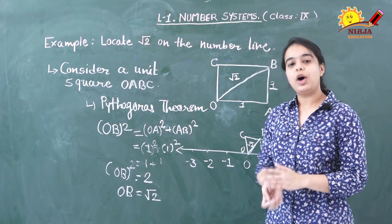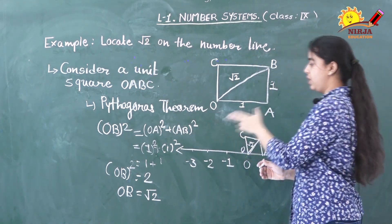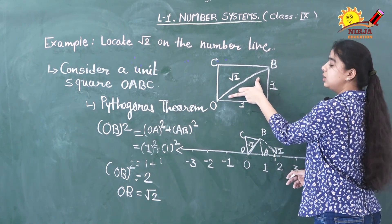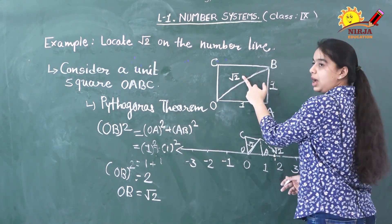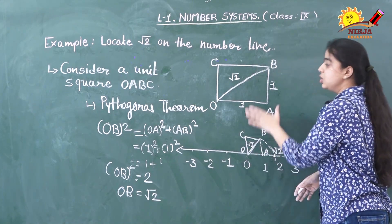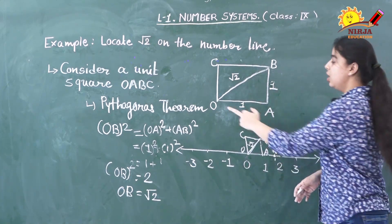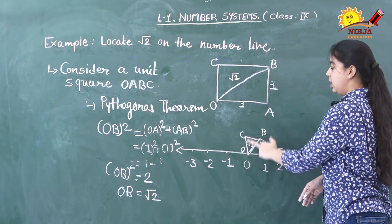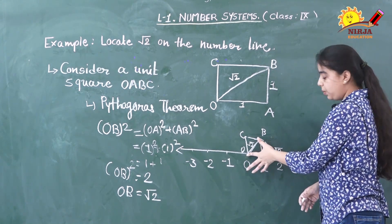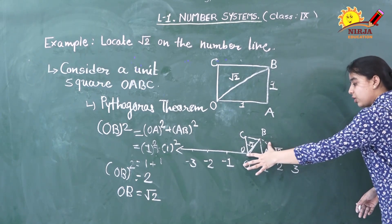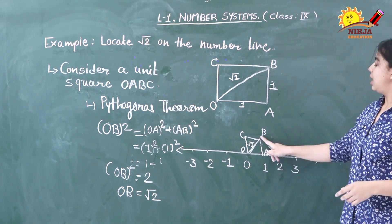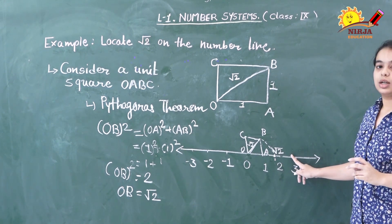To summarize: consider a unit square, give it a name, apply the Pythagorean theorem to get OB = √2, draw a number line and place the figure so that O and 0 coincide, then take the compass with center O and radius OB, draw the arc until it intersects the number line, and that intersection point is √2.